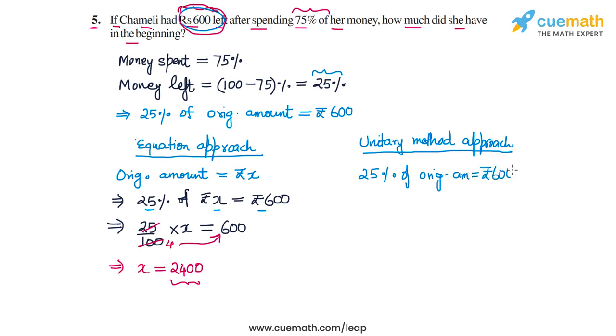This means that 1% of original amount is Rs. 600 by 25.